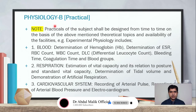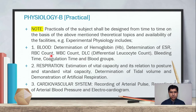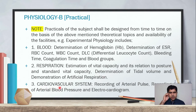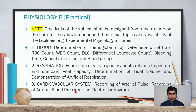Now we go towards the Physiology B practicals. Blood practicals include determination of hemoglobin, determination of ESR, erythrocyte sedimentation rate, red blood cell count, white blood cell count, DLC differential leukocyte count, bleeding time, coagulation time, and blood groups. The second practical on respiration covers estimation of vital capacity and its relation to posture and standard vital capacity, determination of tidal volume, and determination of artificial respiration. The third major practical is the cardiovascular system, including recording of arterial pulse, blood pressure, and electrocardiogram.